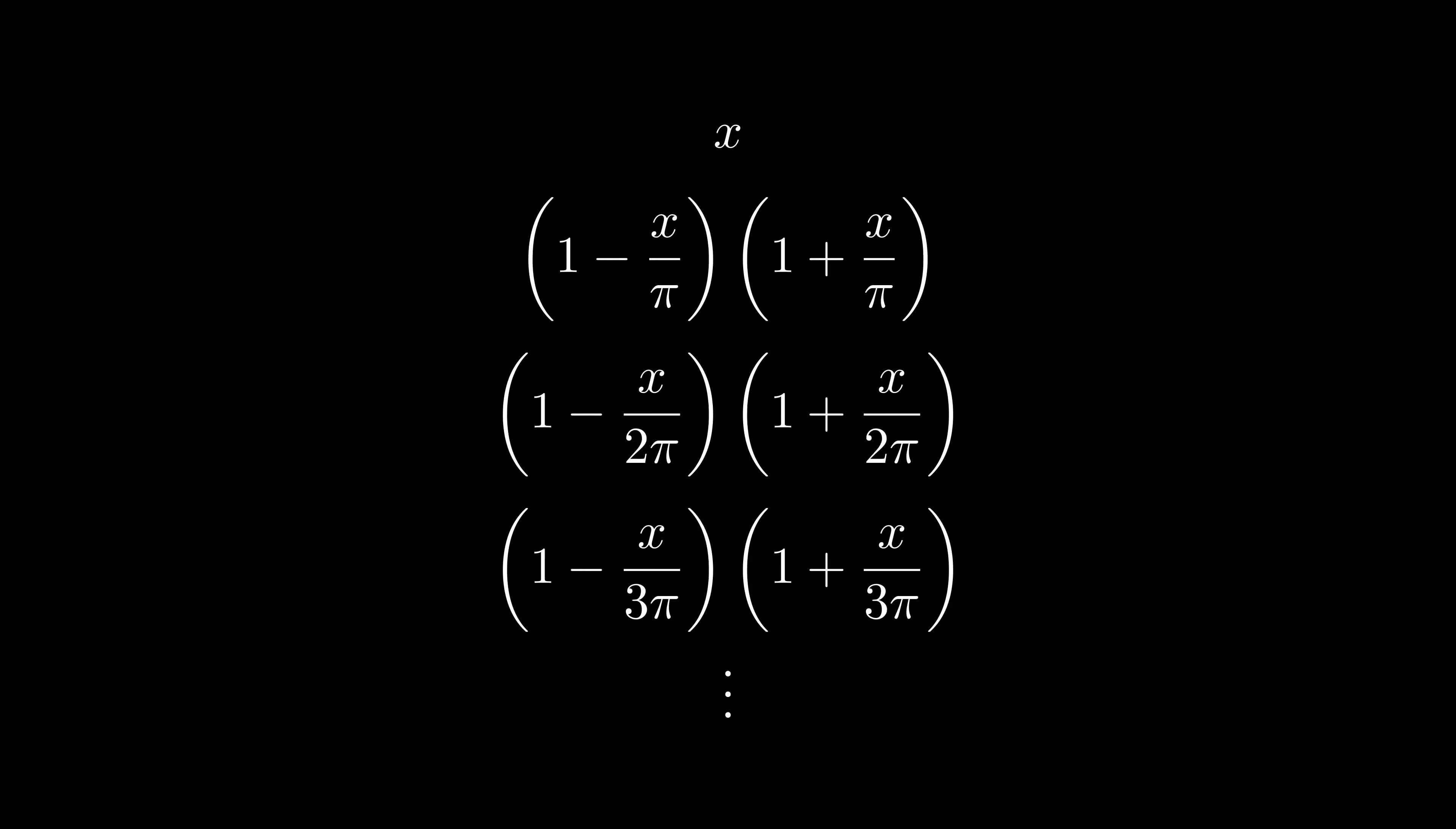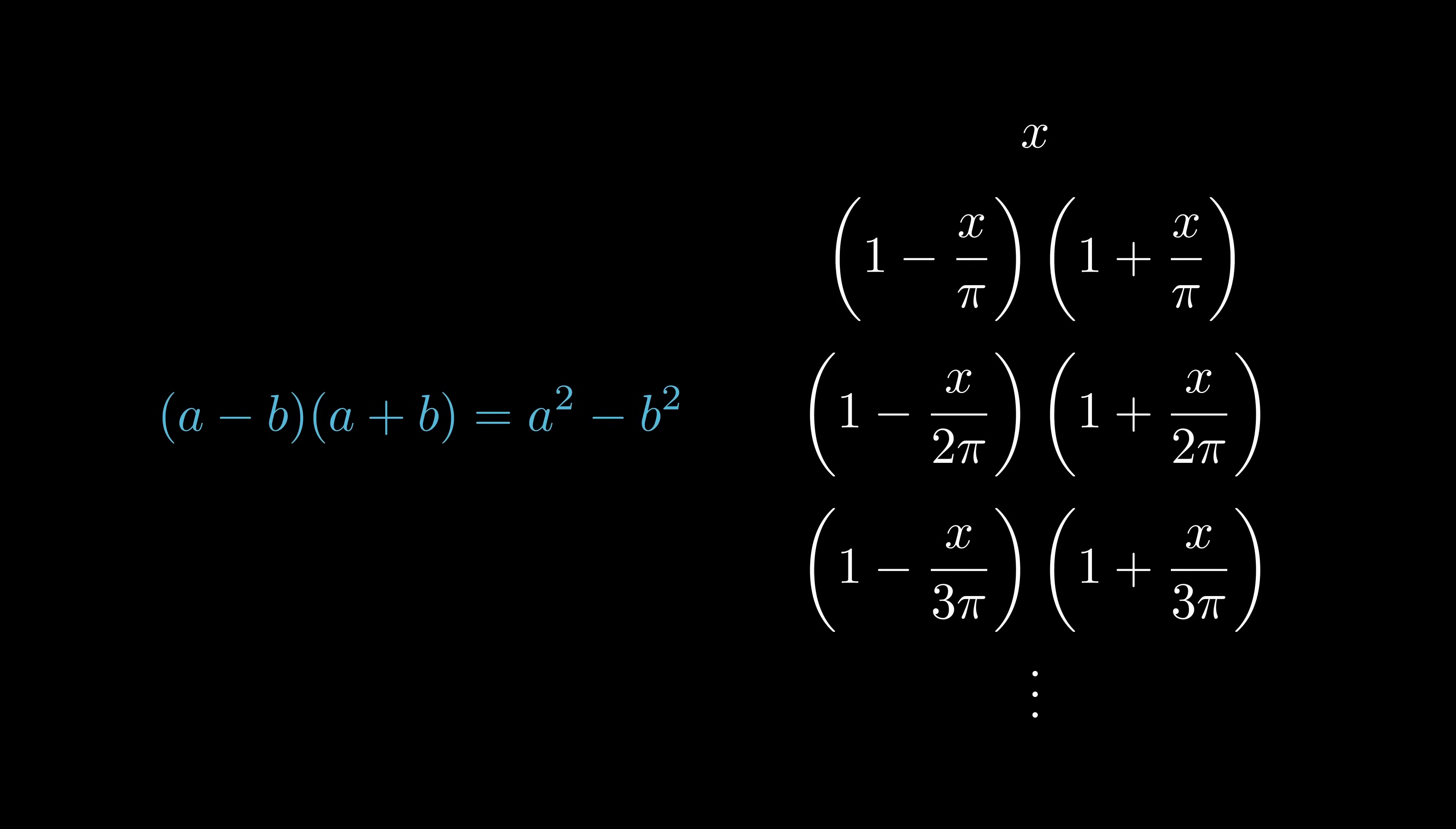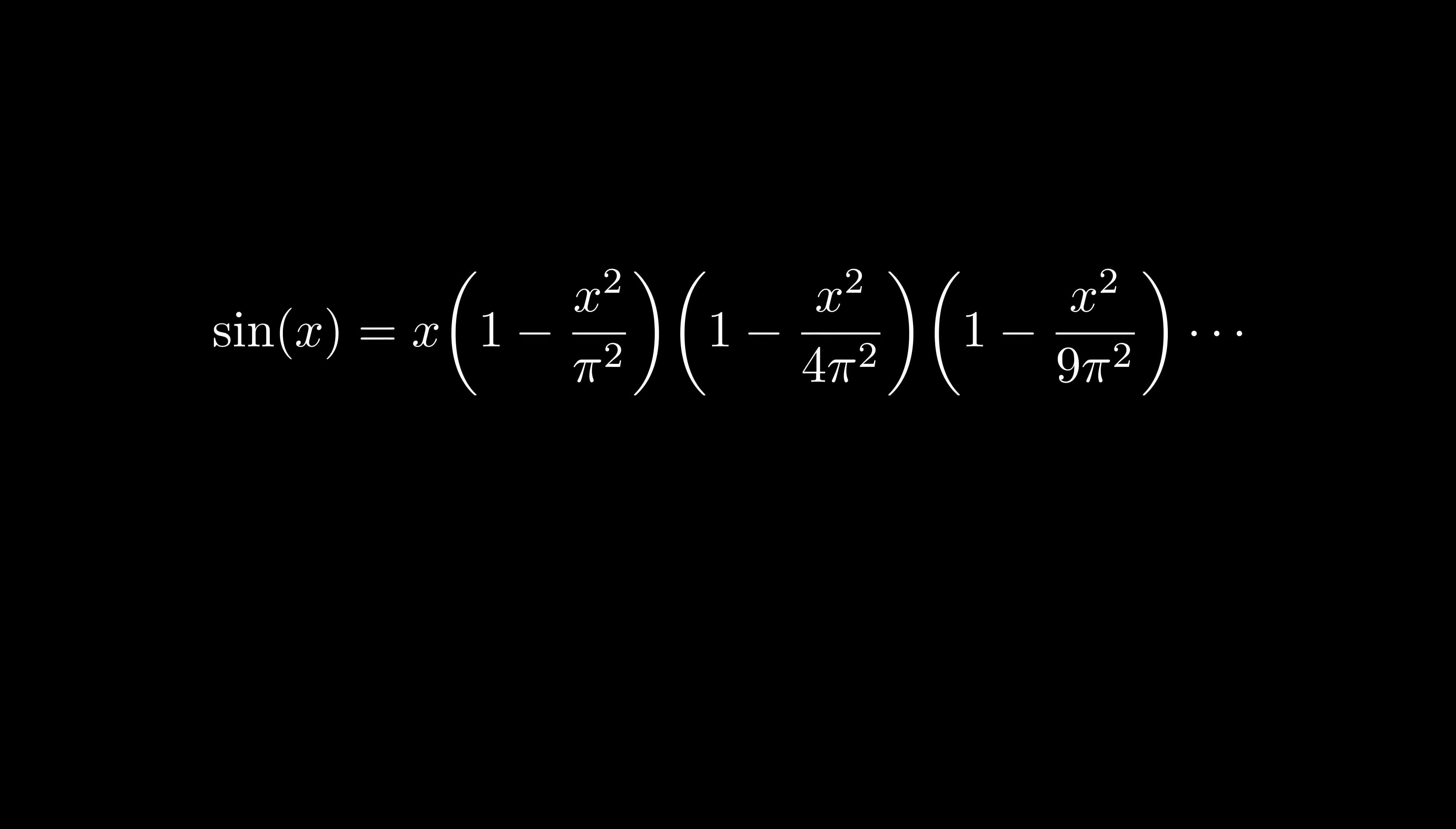Each line has 1 minus something times 1 plus that same thing. Remembering our algebra identities, this simplifies to a difference of squares. Finally, note that we have an infinite product following a simple pattern, so we can wrap it all up in product notation. And now we're really done.